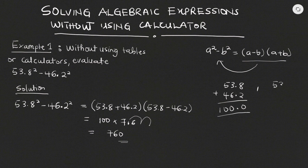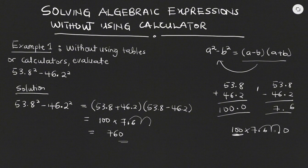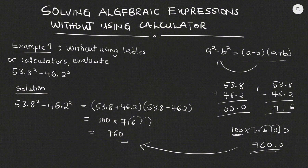And then for 53.8 minus 46.2, we did the subtraction: 8 minus 2 gives us 6, then 53 minus 46 gives us 7, so that is how we have 7.6. And that is what we used. Now 100 multiplied by 7.6 — we move the decimal point twice, so our result becomes 760 as our answer.